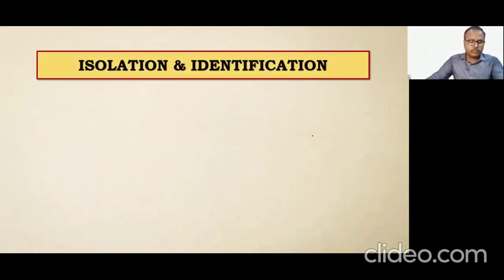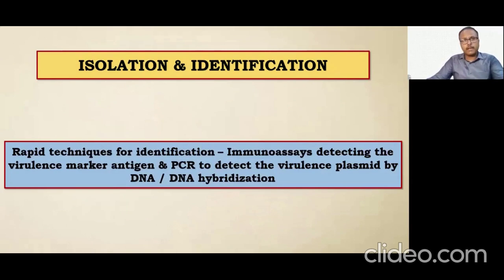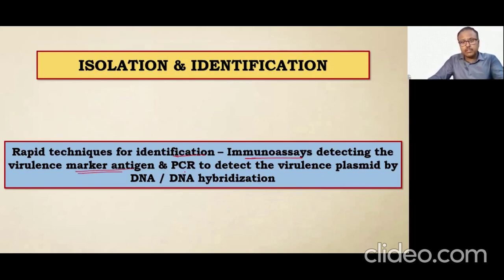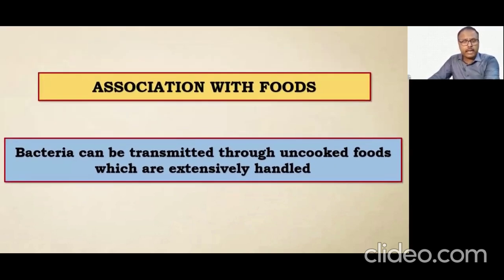For isolation when shigellosis is detected, doctors prefer stool tests from the patient. Stool samples are collected and Shigella bacteria are isolated from them. For identification, immunological techniques can be used, such as virulence marker antigens to detect Shiga toxin, as well as PCR and DNA hybridization processes.